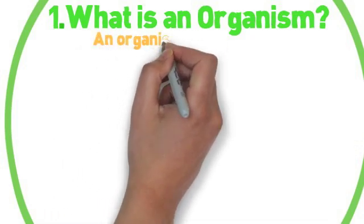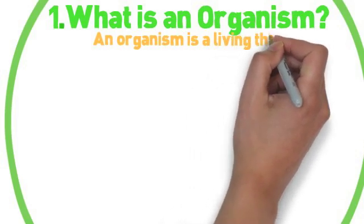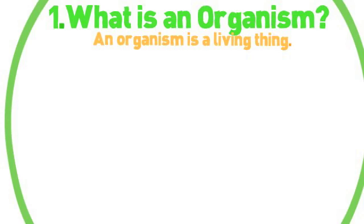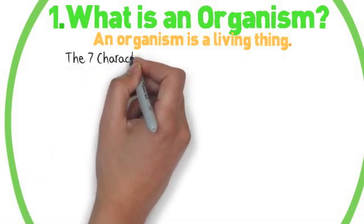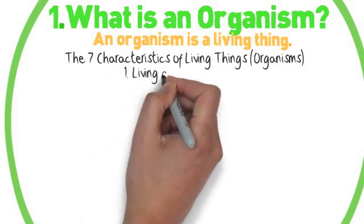So what is an organism? An organism is a living thing, and how we know something's living, it's not as easy as you might think. It actually relies on seven characteristics. If it has seven of these characteristics, it is living.